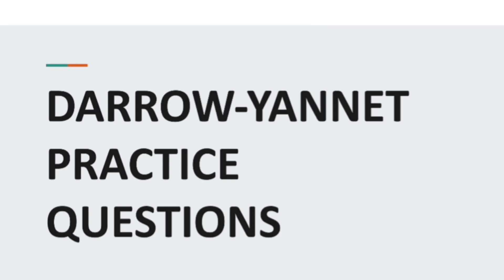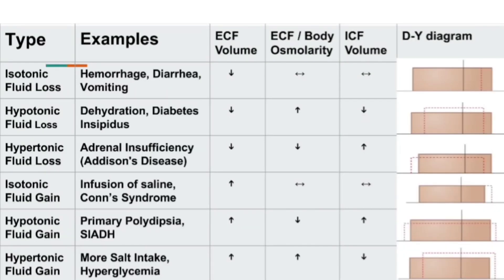Now let's go through the basics. There are six Darrow Inert Diagrams. I divided them into two parts: body fluid disturbance due to fluid loss, and body fluid disturbance due to fluid gain. Each part is further divided into three types — isotonic, hypotonic, and hypertonic fluid loss or gain.